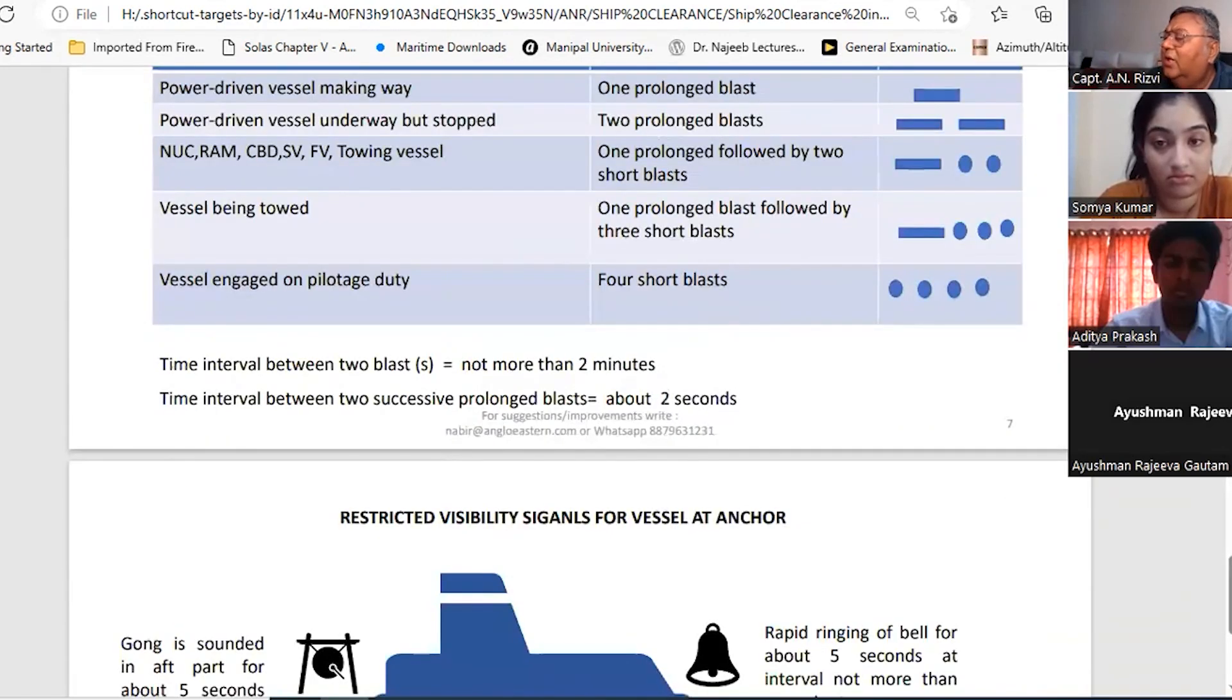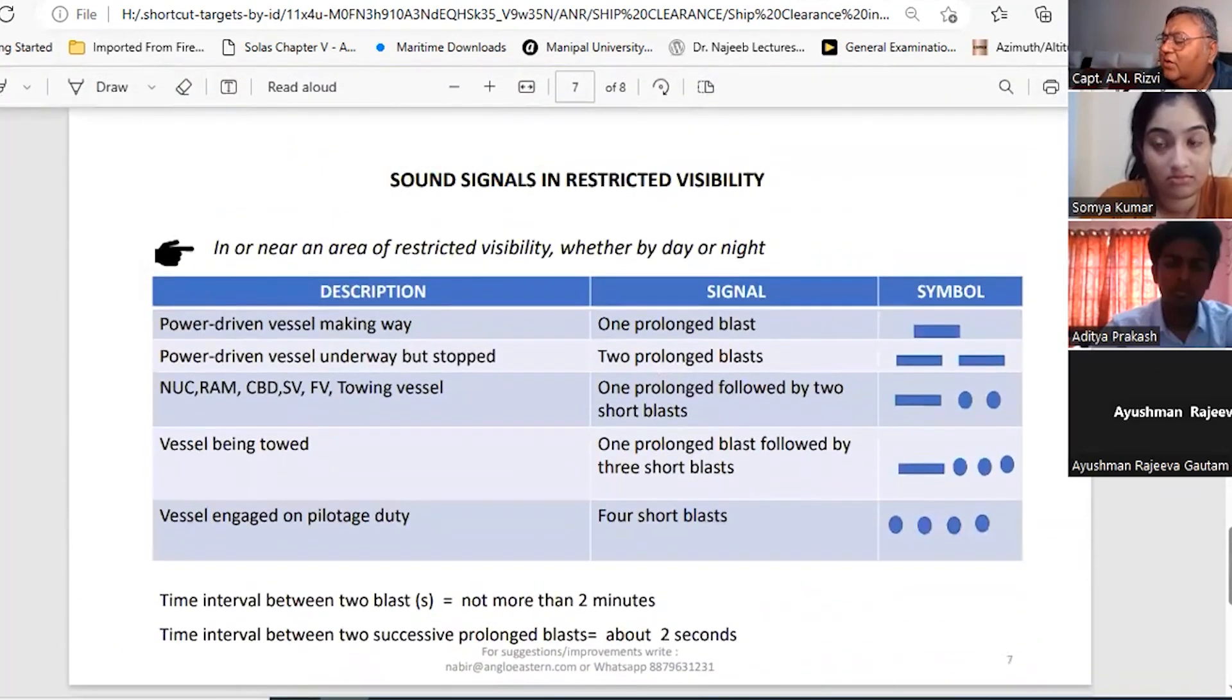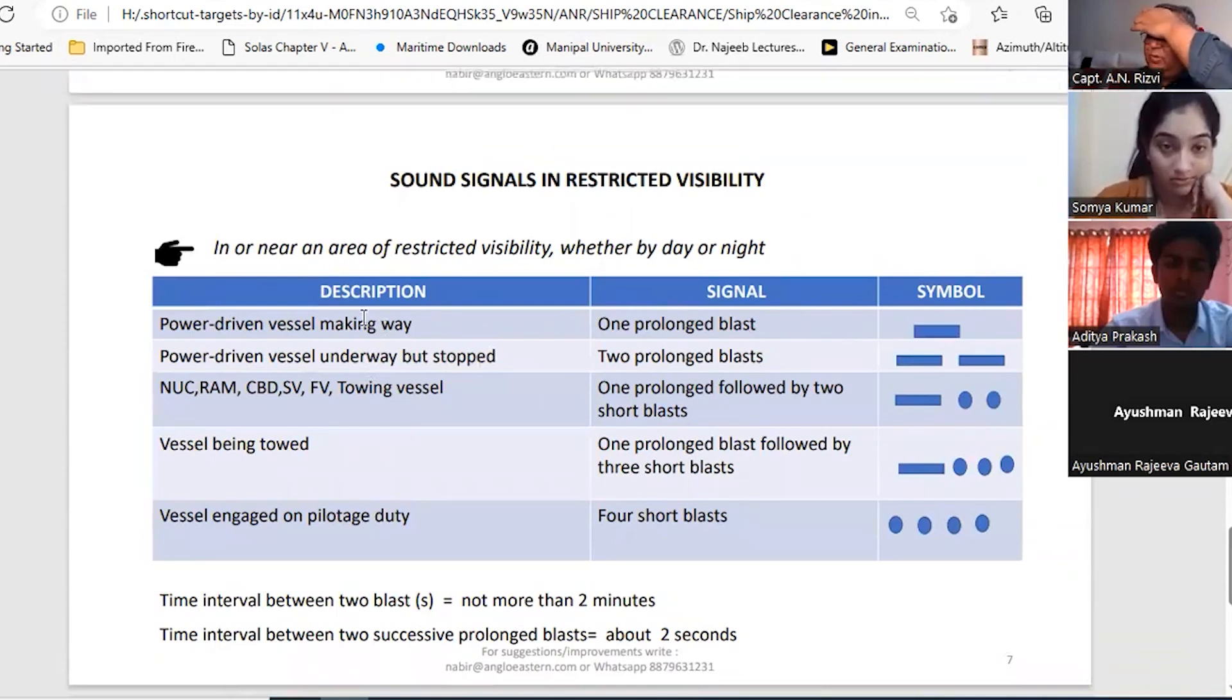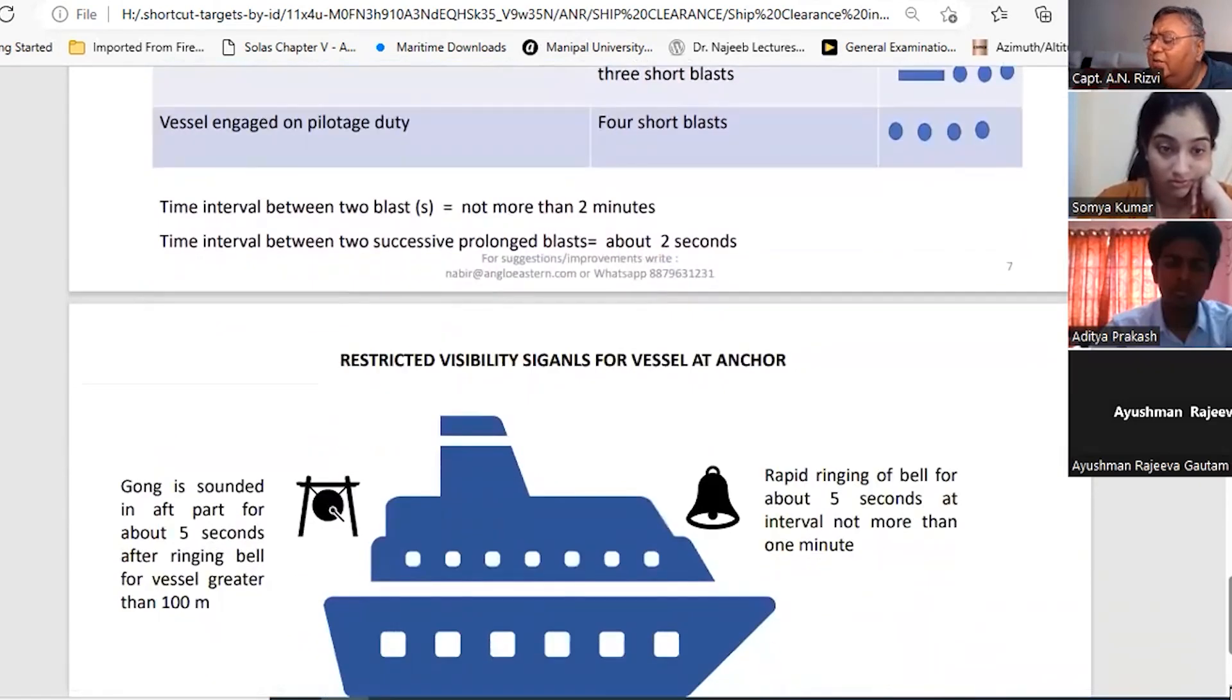Sound signals - power-driven vessel making way is one prolonged. Power-driven vessel underway but stopped, two prolonged blasts. And then NUC, RAM, CBD, etc., one prolonged and two short blasts. Vessel being towed is one prolonged three short blasts. Vessel engaged in pilotage duty - usually you won't find this signal, but this is four short blasts.